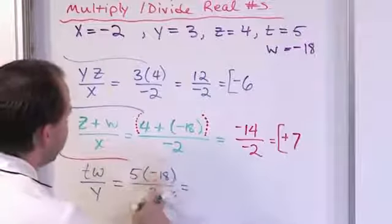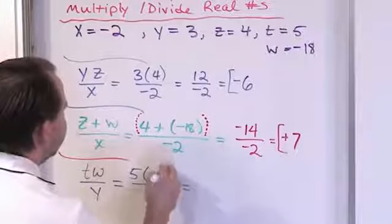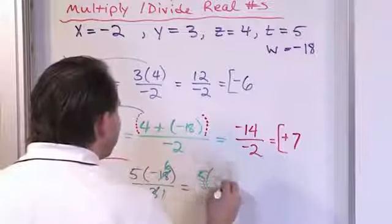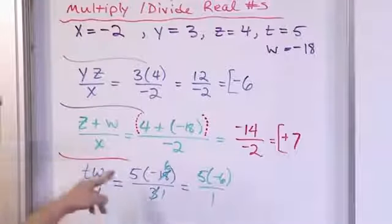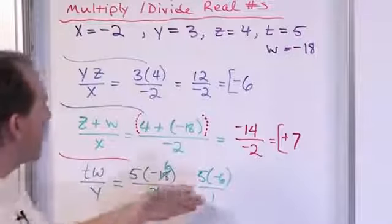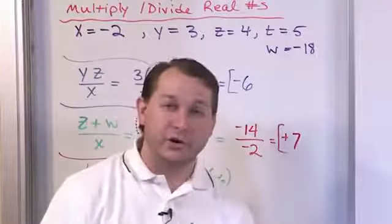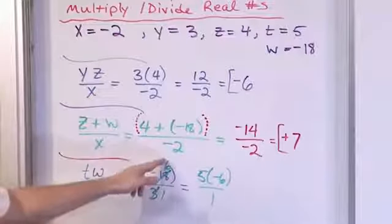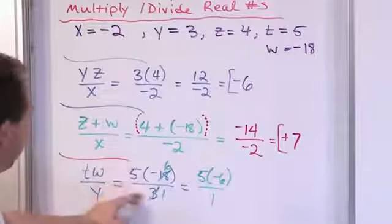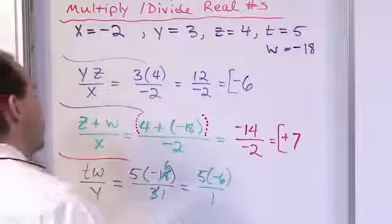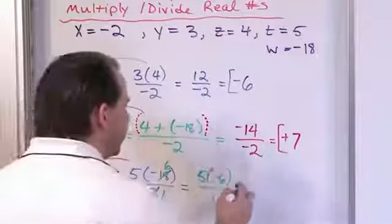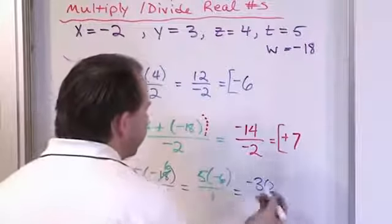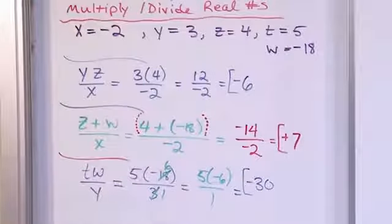After simplifying, we have 5 times negative 6 on top and 1 on the bottom. I could have done 5 times negative 18 to get a big number, then divided by 3 — that would also be correct — but simplifying ahead of time avoids large numbers. 5 times 6 is 30, and since the signs are different, it's negative 30. Divided by 1, anything divided by 1 is itself. So the answer is negative 30.